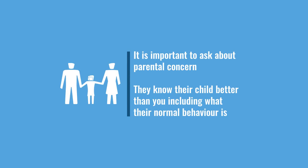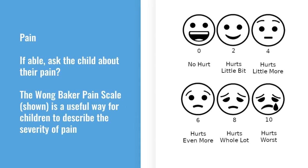With kids, gauging parental concern can be a real red flag. Parents generally know their children best and will know if behavior has changed. If you're able to ask the child about pain, there's the Wong-Baker Faces pain rating scale, which we often use with children — it's a pictorial guide where they don't have to explain themselves, they can just point to a face.